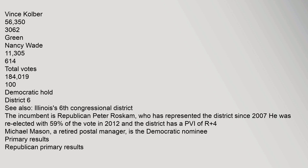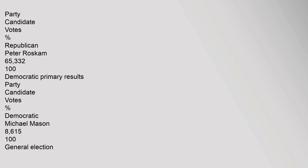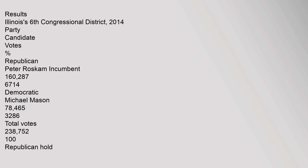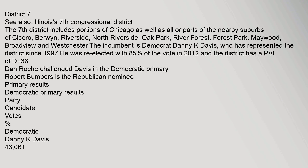District 6 — Illinois's 6th Congressional District. The incumbent is Republican Peter Roskam, who has represented the district since 2007. He was re-elected with 59% of the vote in 2012, and the district has a PVI of R+4. Michael Mason, a retired postal manager, is the Democratic nominee. Republican primary: Peter Roskam – 65,332 votes, 100%. Democratic primary: Michael Mason – 8,615 votes, 100%. General election results: Peter Roskam (R) 160,287; Michael Mason (D) 78,465; Total votes 238,752. Republican hold.